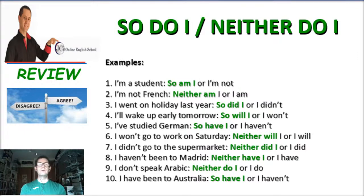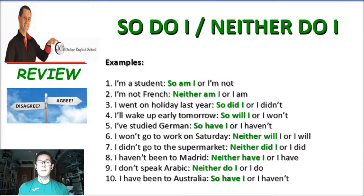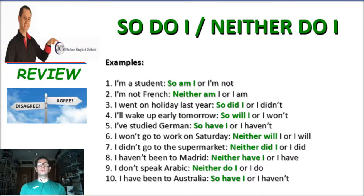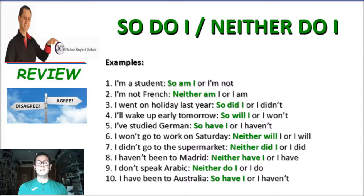Notice it is very important to understand the auxiliary verb the person is using at the beginning of the sentence. For example, "I'm a student" uses the verb to be, so you say "so am I" or "I am not." For sentence six, "I won't go to work on Saturday" — the auxiliary is "will," so you say "neither will I" or "I will." For number eight, "I haven't been to Madrid" — the auxiliary is "have," so you use "neither have I" or "I have." For number nine, "I don't speak Arabic" — the auxiliary is "don't," so you say "neither do I" or "I do." Depending on the auxiliary in the first sentence, that's the one you use.